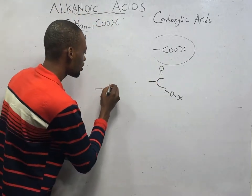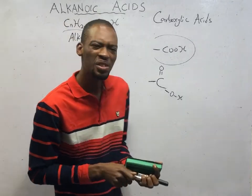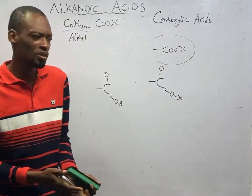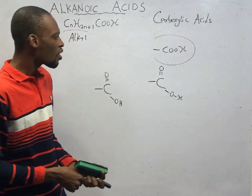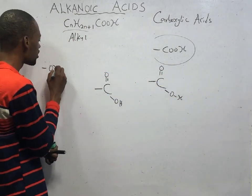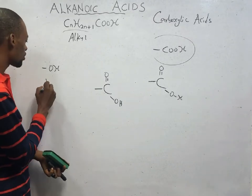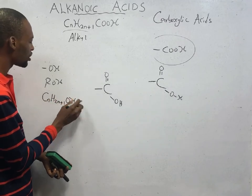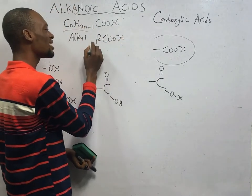Looking at the COOH group further — in my last video I explained alkanols, whose functional group is simply OH, the hydroxyl group. Alkanols are formed when the OH group attaches to the general formula: ROH or CₙH₂ₙ₊₁OH. The alkyl group CₙH₂ₙ₊₁ can also be written as R. So the formula RCOOH also represents alkanoic acids.